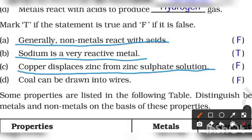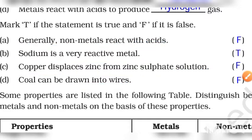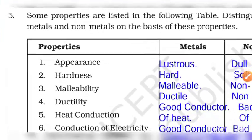Next: coal can be drawn into wires. First, coal is non-metal, so what will happen? The ductility property will not be seen, so what will happen? False. Question number 5 is a slightly different question.